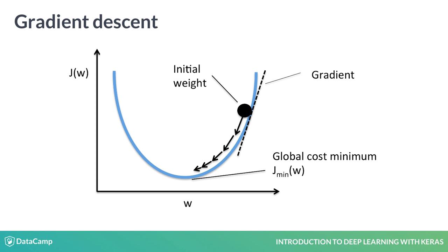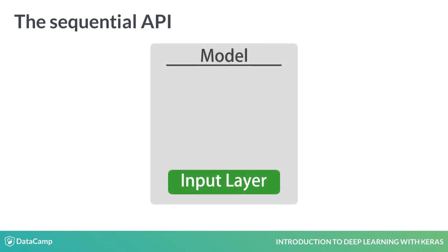That was a lot of theory. The code in Keras is much simpler, as we will see now. Keras allows you to build models in two different ways: using either the functional API or the sequential API. We will focus on the sequential API.